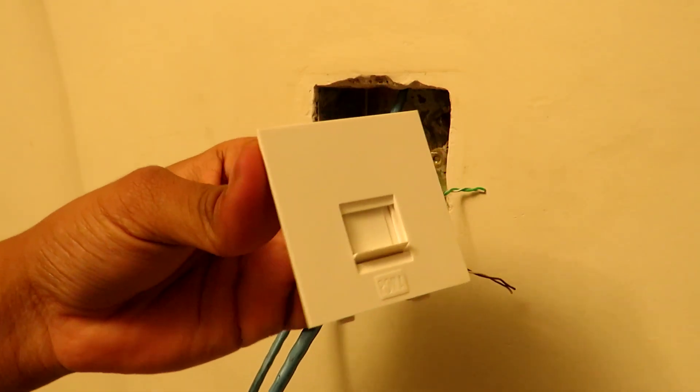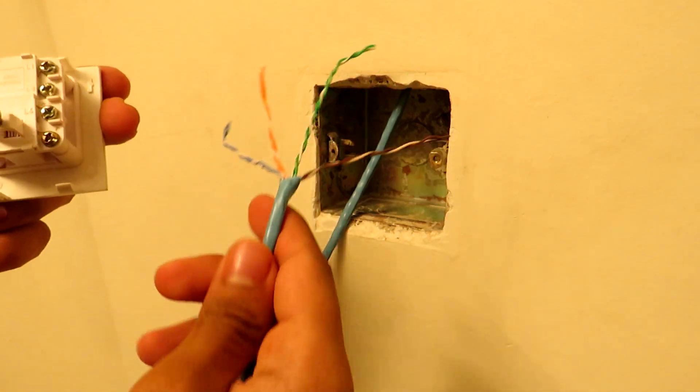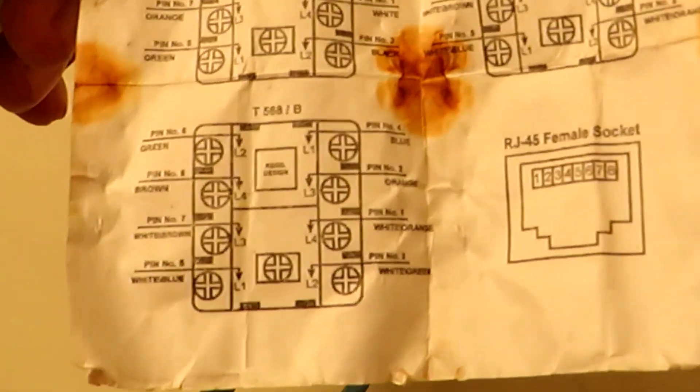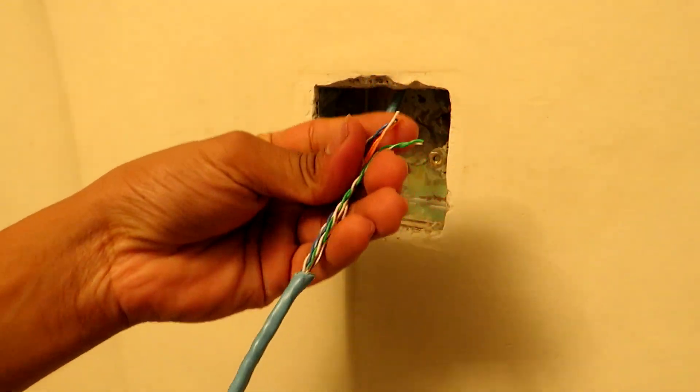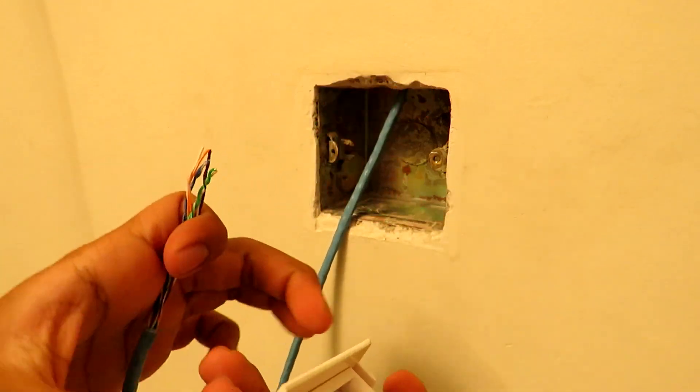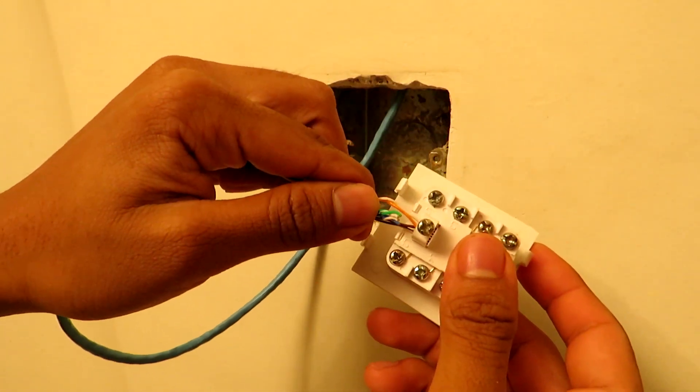This is our Anchor Roma screw type RJ45 socket and this is the wiring layout diagram for the socket. We are going to be following the T568B type of connection because this is the type of wiring pinout standard that is used for majority of the communication devices like modems, routers, gateways, hubs, switches, etc.